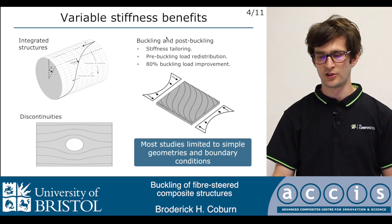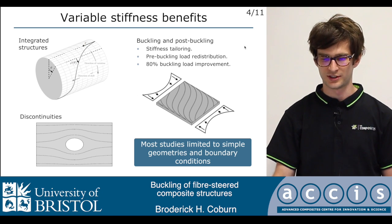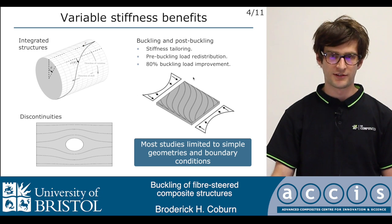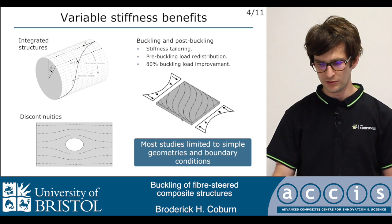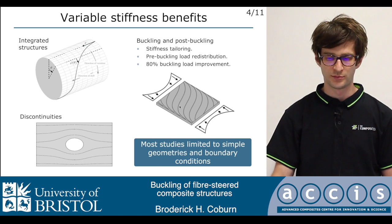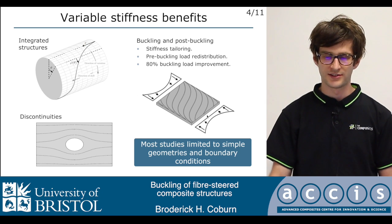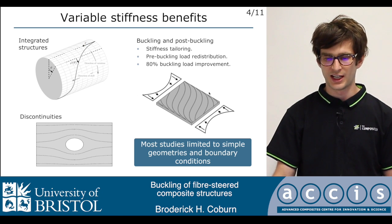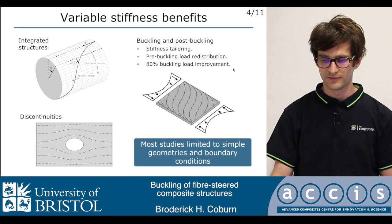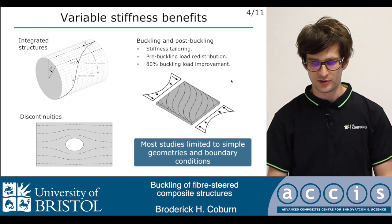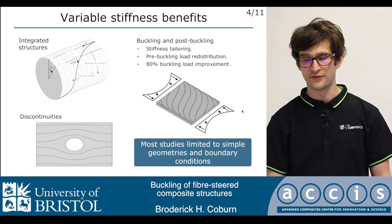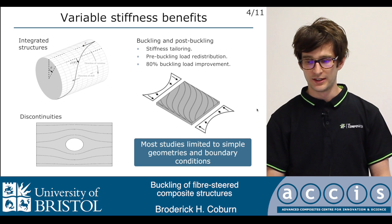I'm looking at the buckling and post-buckling performance of variable stiffness structures. The main improvement is that if a panel is simply supported around all four edges, it will attract more load to the supported regions, and by redistributing load out of the centre of the panel we get improved buckling loads. It has been shown that for a simple linear variation you can get an 80% buckling load improvement for a constant thickness panel. However, most studies are limited to simple geometries, so the aim of my work is to look at more structural applications.